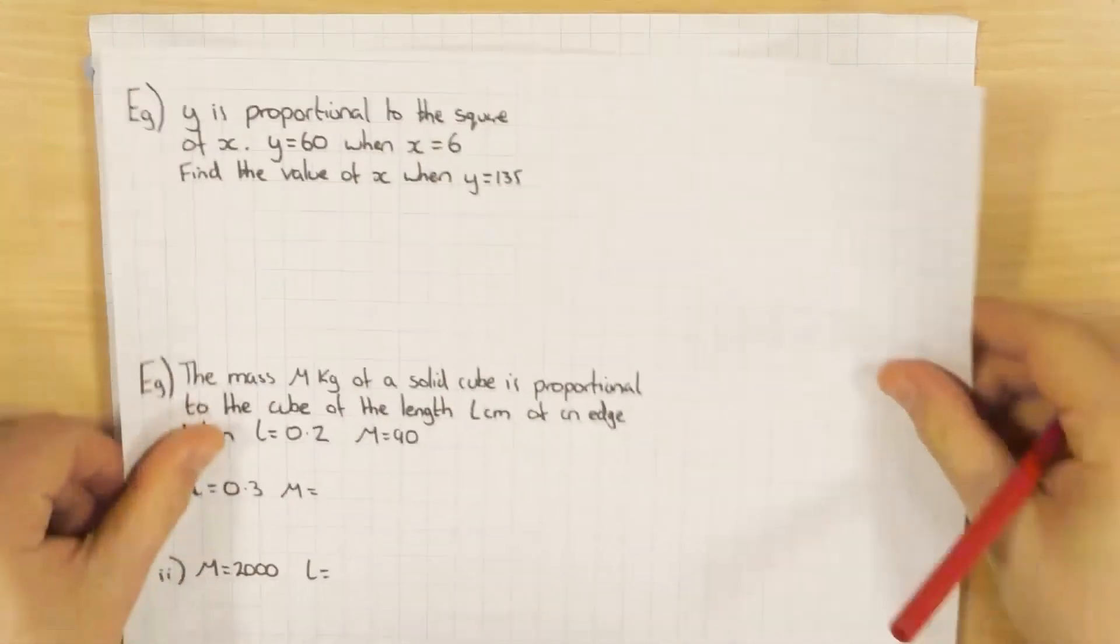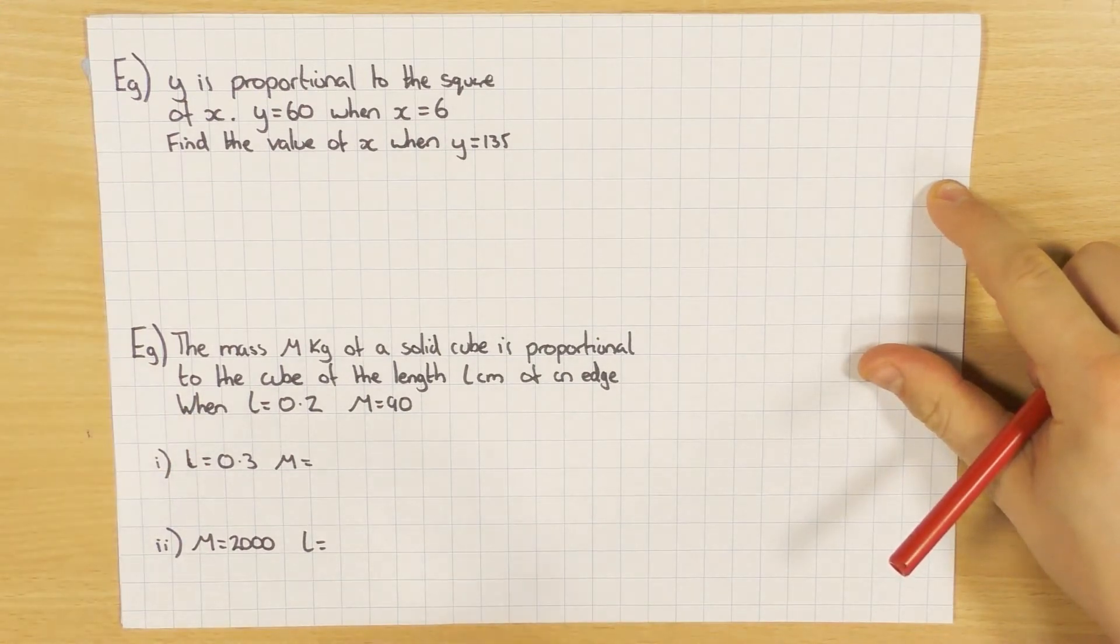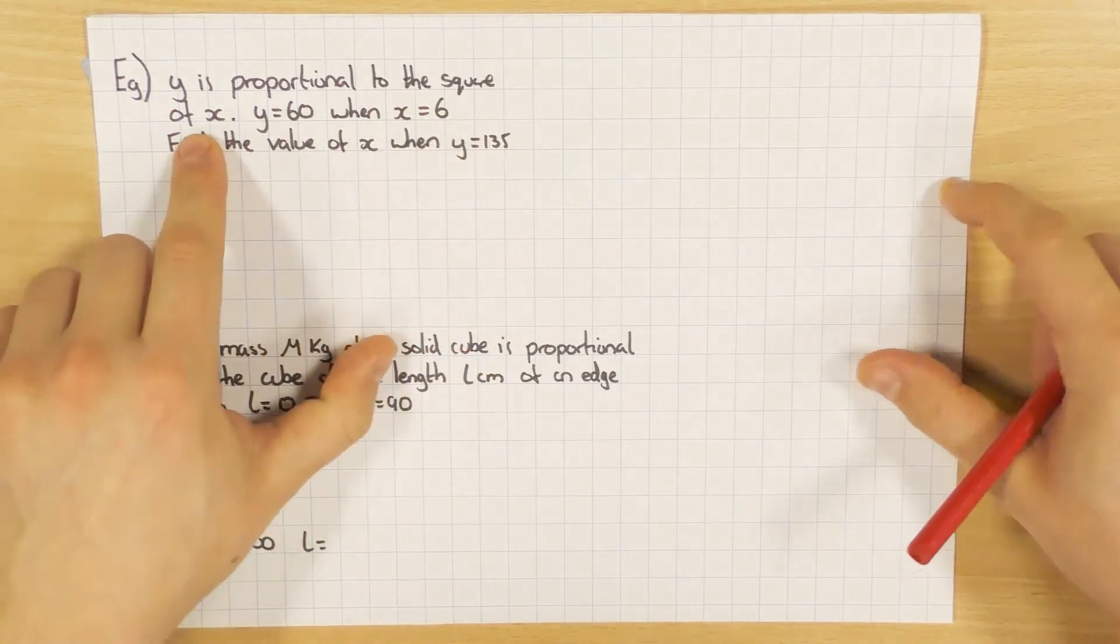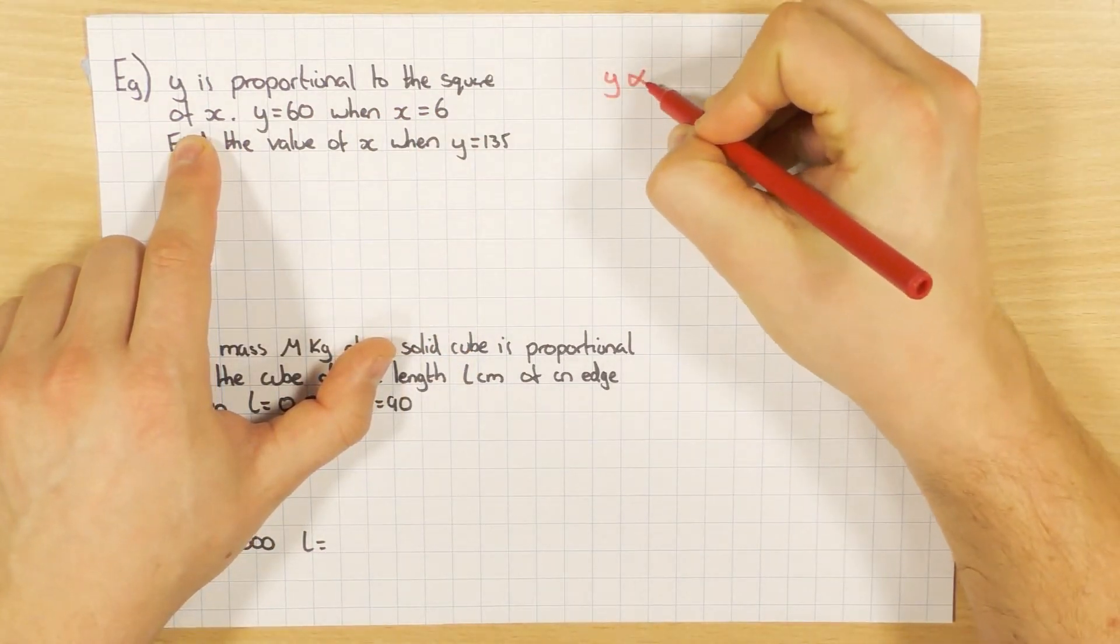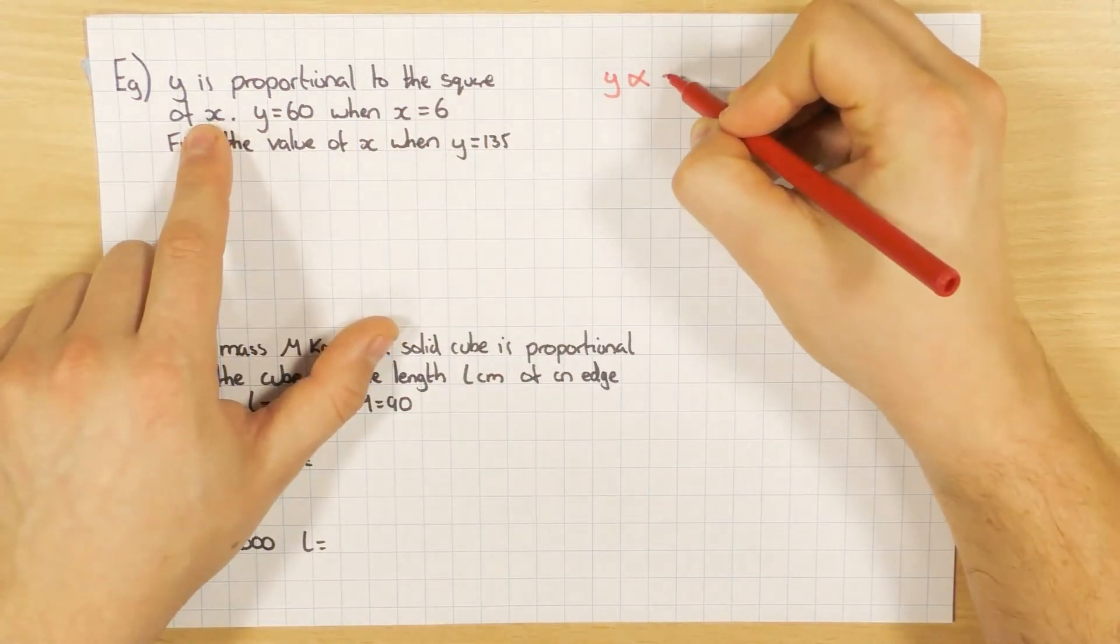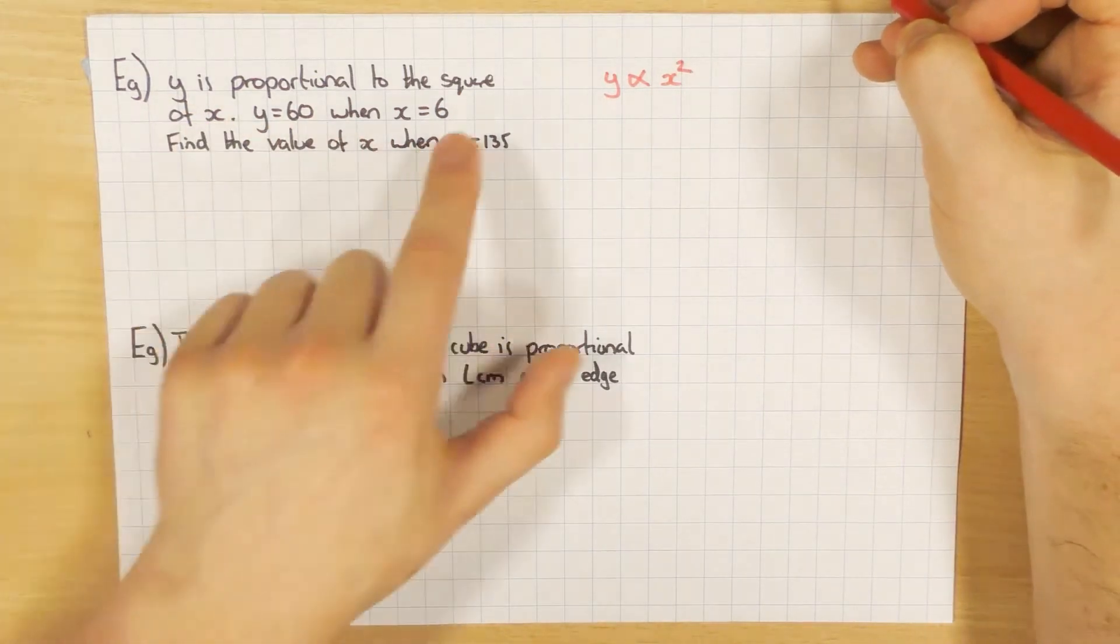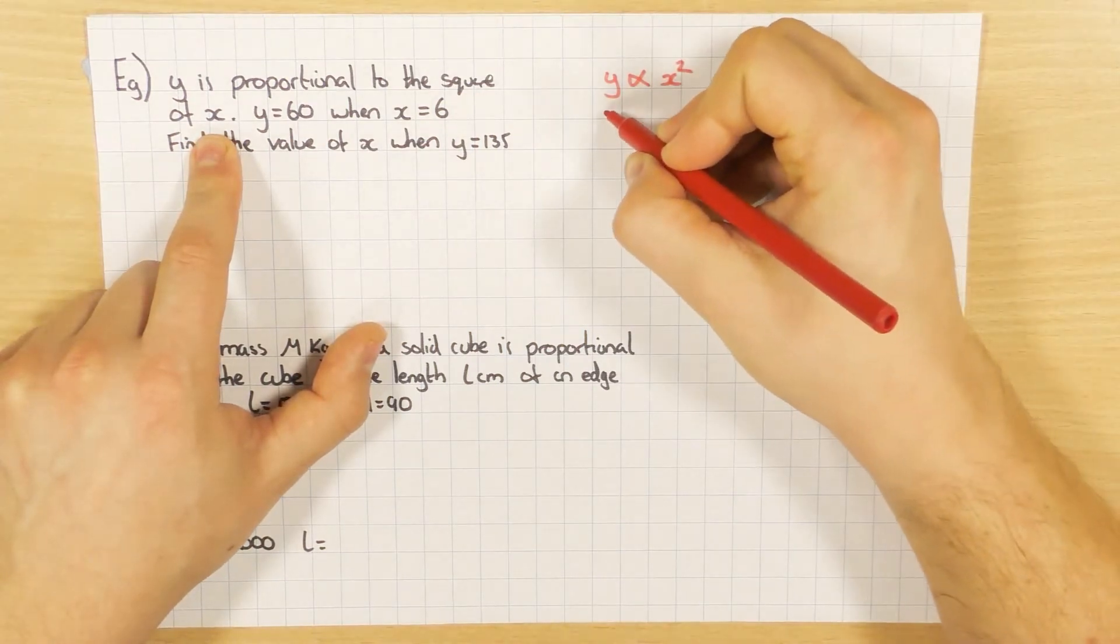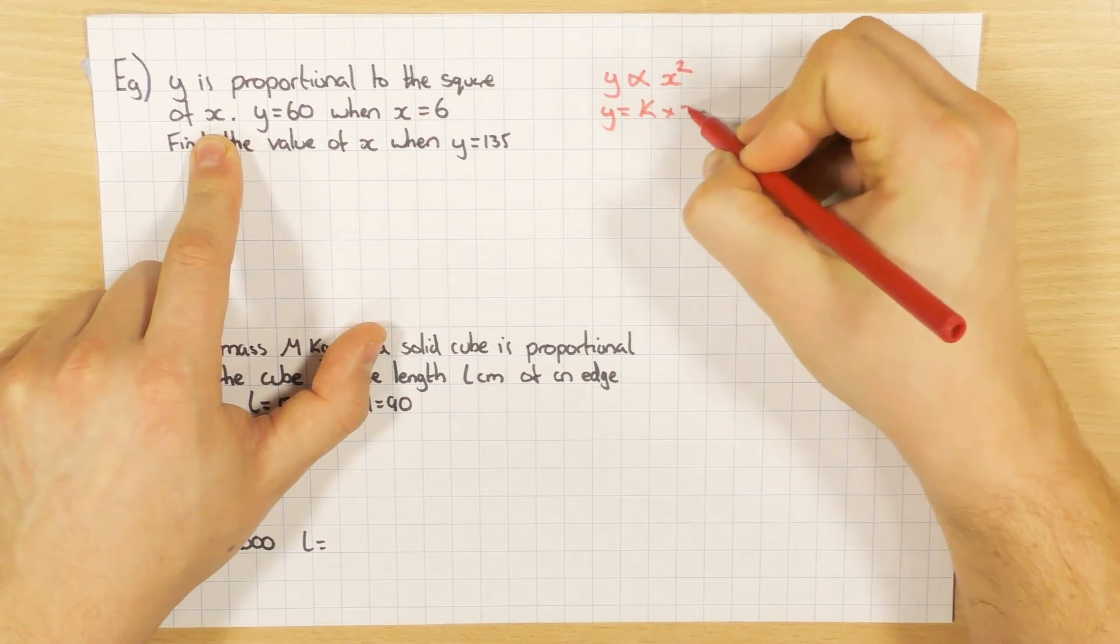So here's my next two examples. So a little bit different here. This time y is proportional to the square of x. So this time it's slightly different. We still have y. We still have our proportional symbol here. But this time it's the square of x, or in other words, x squared. So just be very careful that you do pick up on the square of x. The next steps are exactly the same. We still go y equals the constant times x squared.